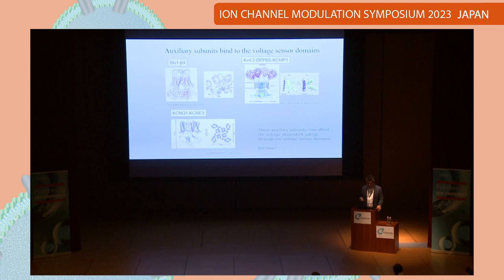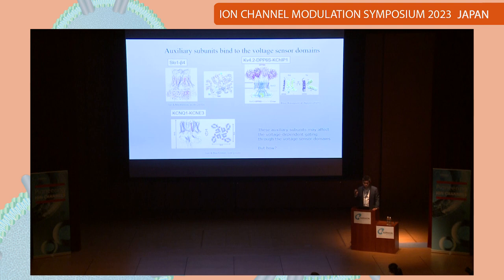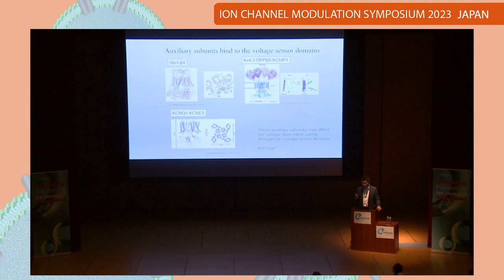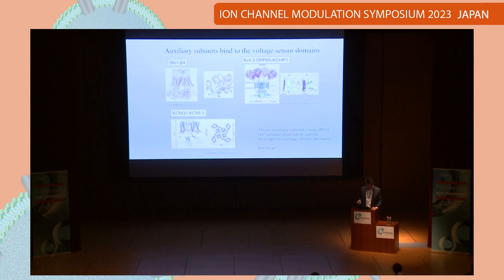The final example is KCNQ1 and KCNE3. This is the structure reported by MacKinnon's group. The red helix is KCNE3, and you can see that KCNE3 binds to both the pore domain and the voltage-sensing domain. All these auxiliary subunits probably affect voltage-sensor movement because they directly bind to the voltage-sensing domain, but we don't know how they modulate the voltage-sensor movement or gating property.